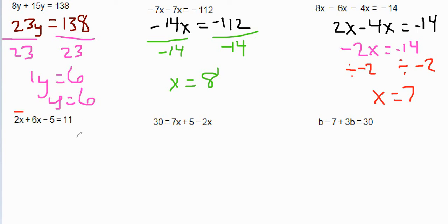Now the next one we have 2x plus 6x minus 5 equals 11. We have a couple options. You can combine like terms first or we can get rid of that negative 5 and move it to the other side. I like to combine like terms first that are on the same side. So the 2x plus 6x is 8x. So let's write that one again. 8x minus 5 equals 11.